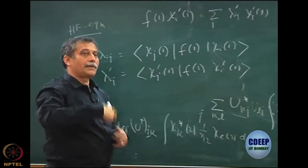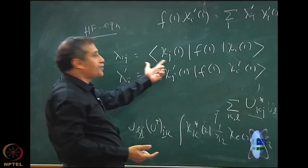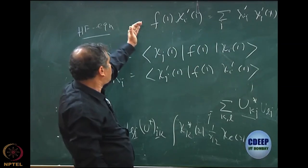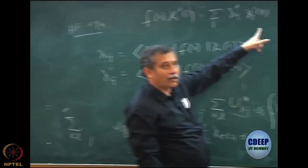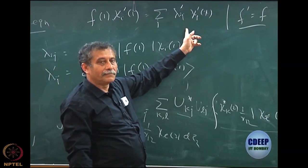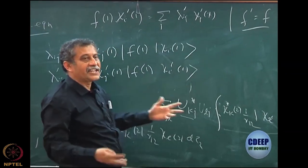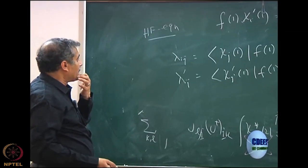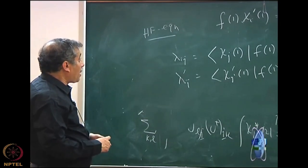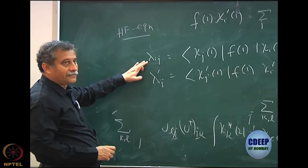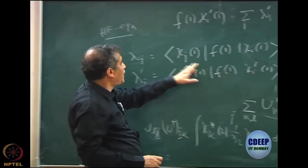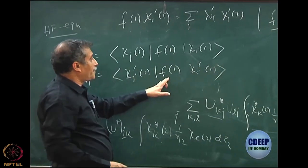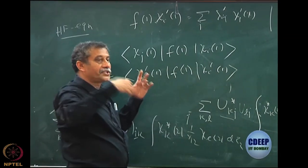That is the reason lambda will change to lambda', because lambda depends on chi. It is a matrix element of the Fock operator. If you just make a multiplication, because they are orthonormal, only one term will survive. There is a dummy index and there is a specific index. The point is that this is the matrix of the Fock operator in a basis.